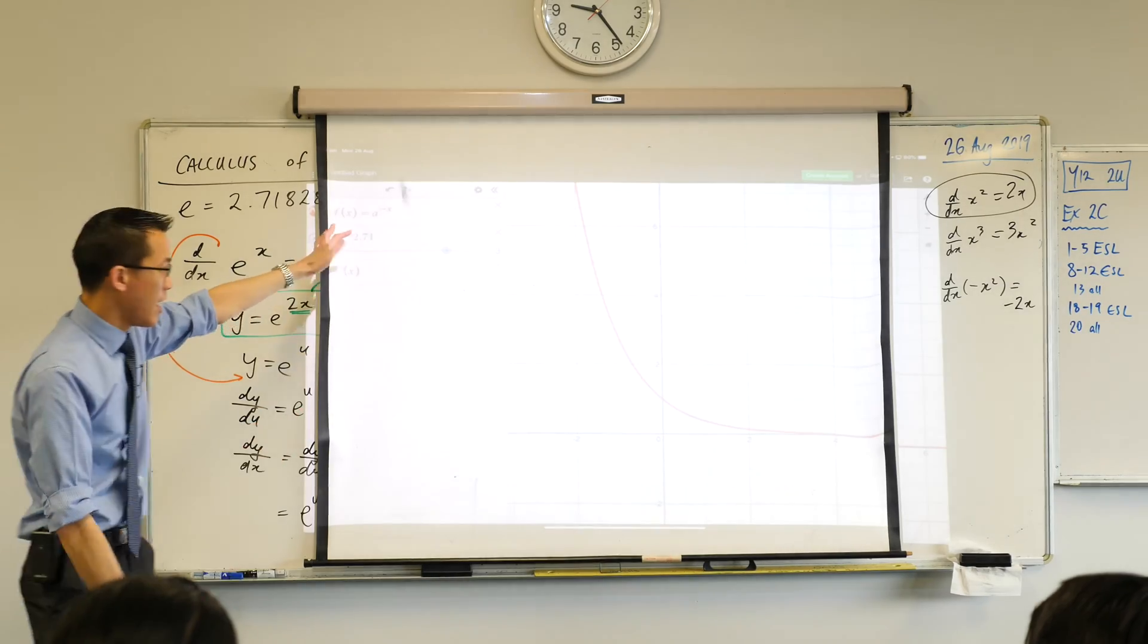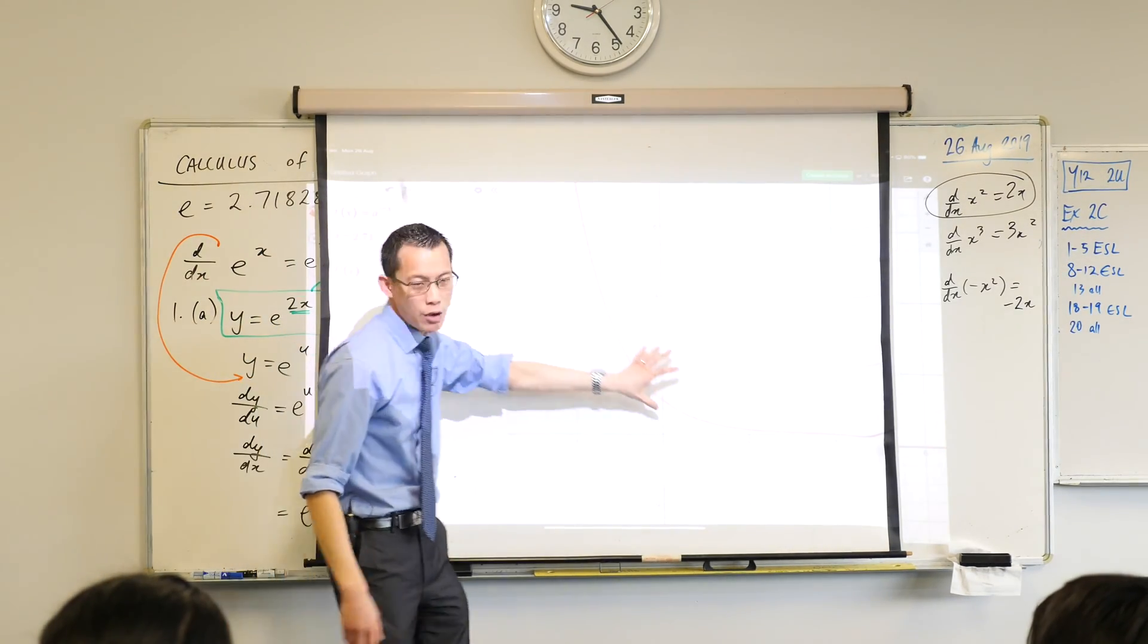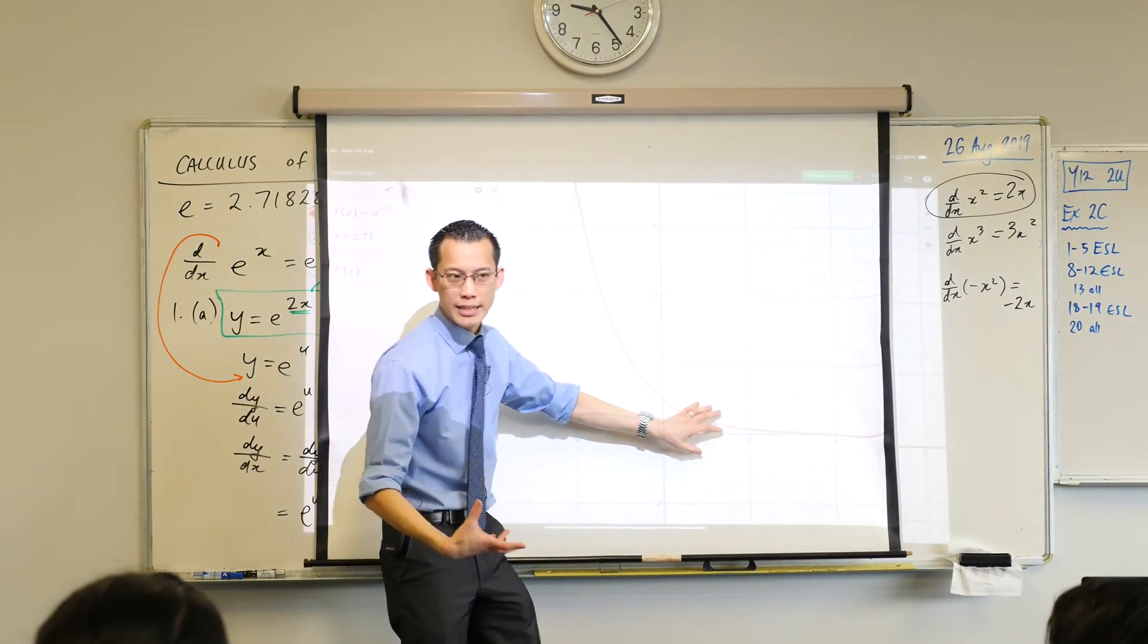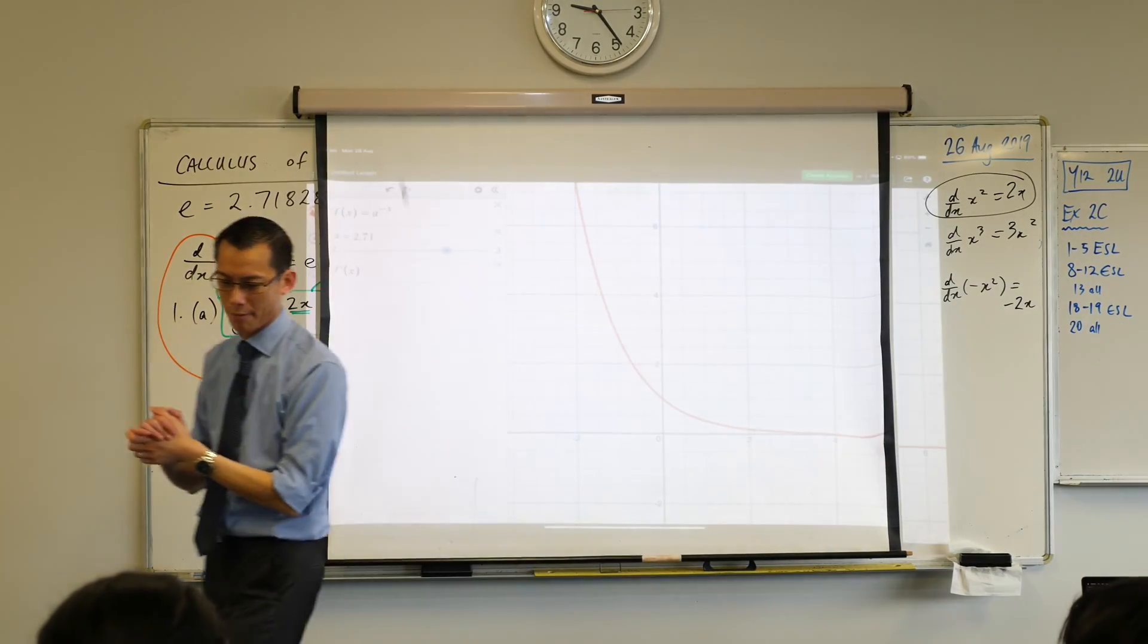So that word decay if it rings any bells from chemistry students. Radioactive decay looks like this. It starts off real fast and then as you have less and less radioactive stuff it decays slower and slower and slower. That's why half lives are important.